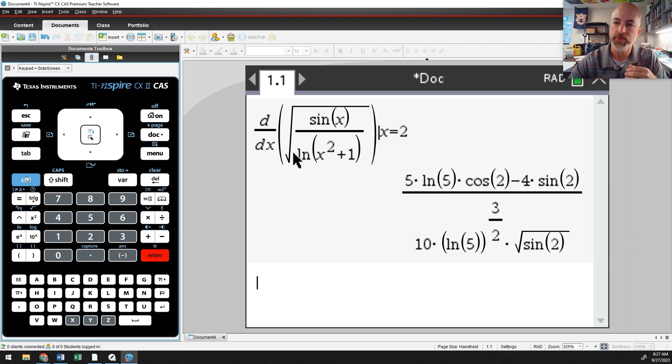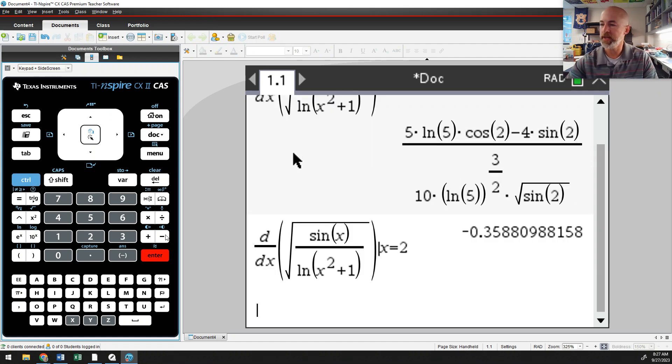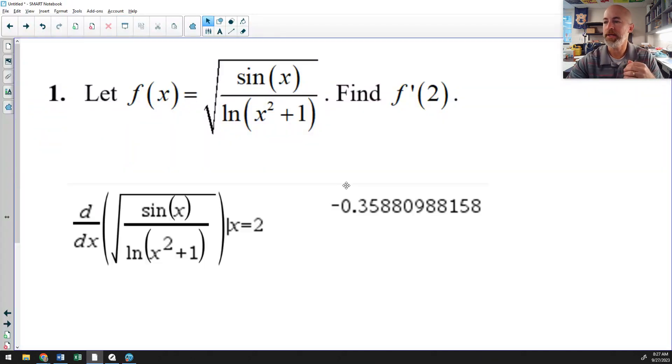However, a decimal is really what the readers want to see. And if you look above the enter button, there's a blue approximate symbol. So if you hit control enter, it will then give you the nice clean decimal answer.